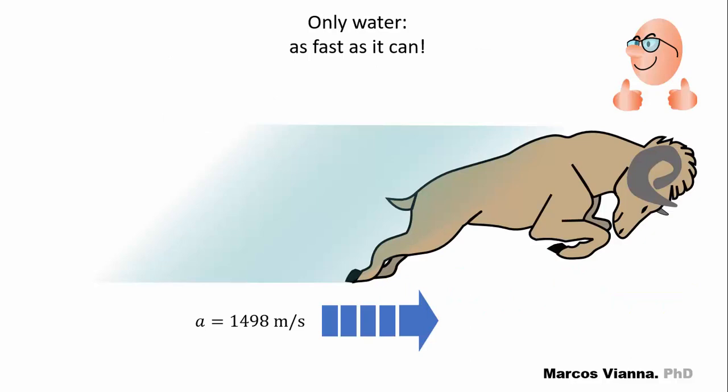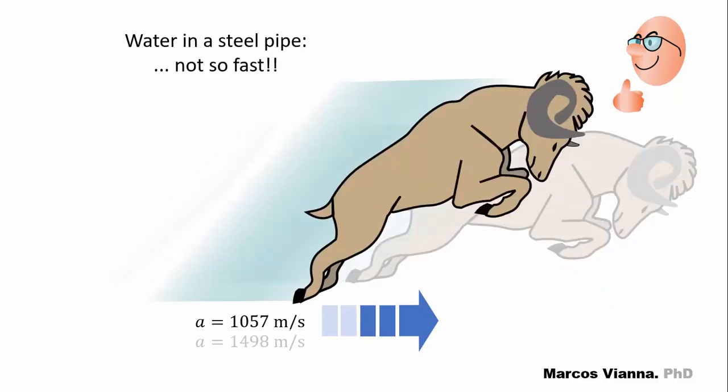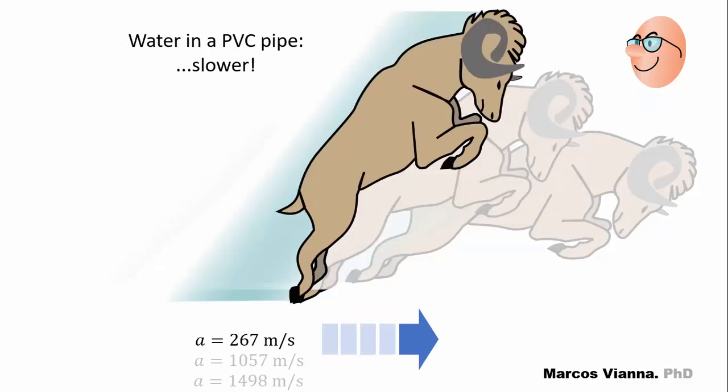So, this is what we have. Celerity is high in water, but not so high in a steel pipe with water and even lower in a PVC pipe with water because the walls of the pipe will deform and reduce the velocity of the waves.